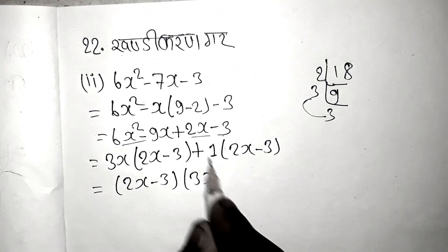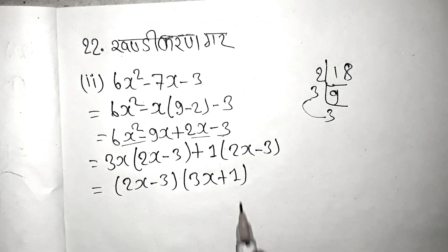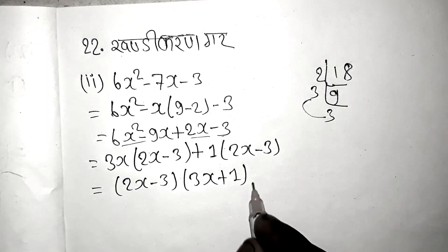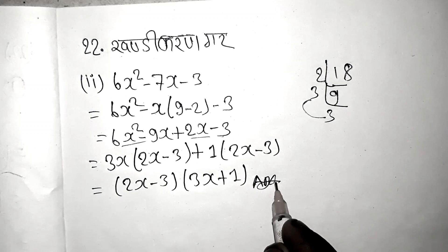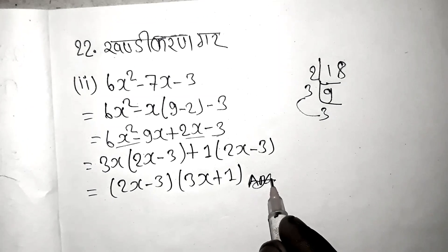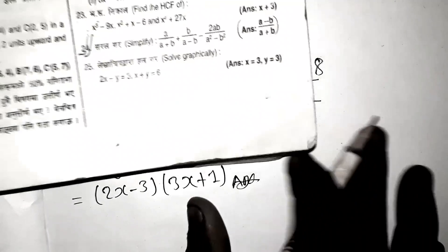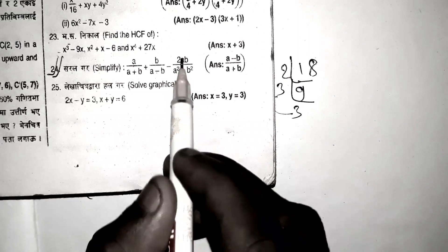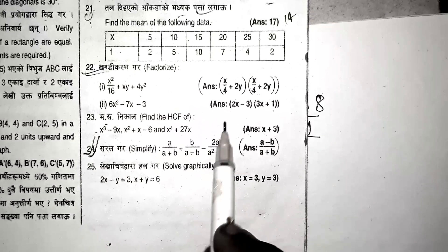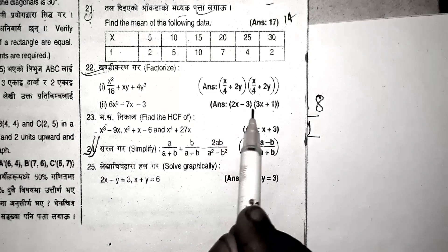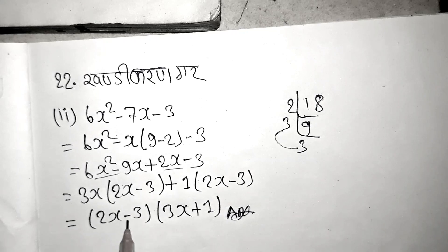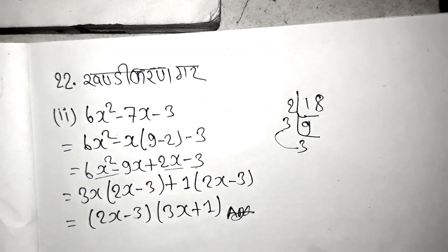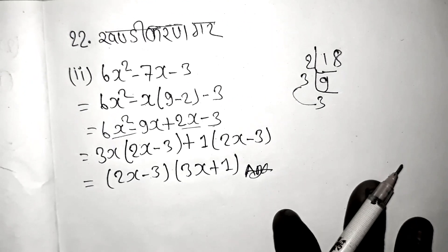The answer is 3x plus 1 and 2x minus 3. So the factors are (2x minus 3) and (3x plus 1).